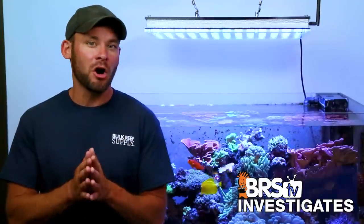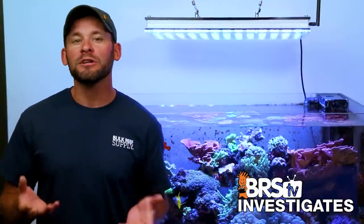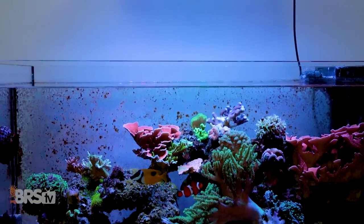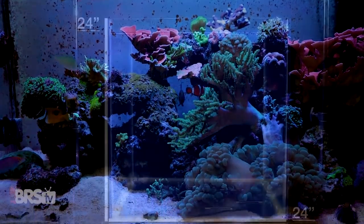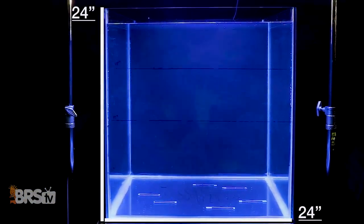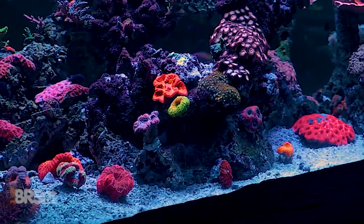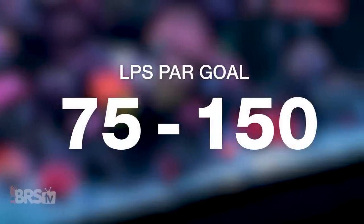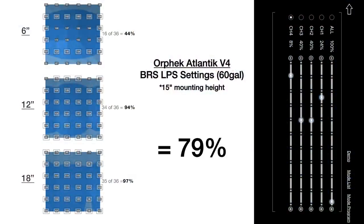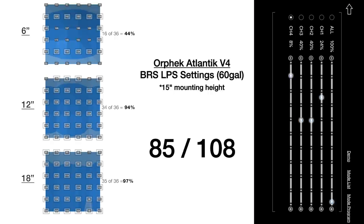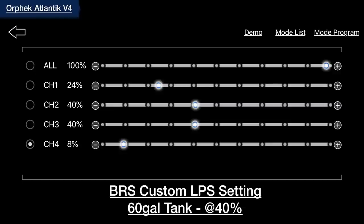However, to reach our specific PAR goals for each tank type, we will adjust the overall intensity of that ratio up or down in order to hit as many PAR data points as possible from the top down to the bottom of each tank. Starting with our 24-by-24-inch 60-gallon testing area and LPS softy PAR goals, in attempting to fill as much of that tank as possible with PAR between 75 to 150, we were able to hit 79% of the entire tank or 85 out of 108 data points measured at 6, 12, and 18 inches deep in the tank. And in order to do that, we lowered our spectrum ratio mix to 40%, meaning that channel two and three were at 40%, channel one was set to 24%, and channel four was set to 8%.